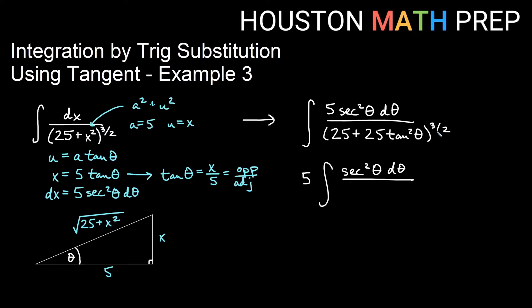And below, we just want to be careful with our three halves power. So the three halves power is a lot like having the square root of 25 plus 25 tangent squared theta. That's the half power part, and then having all of that cubed.